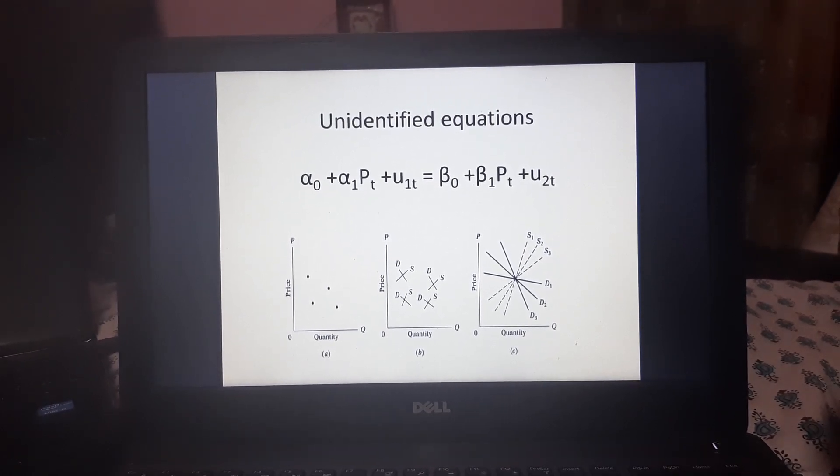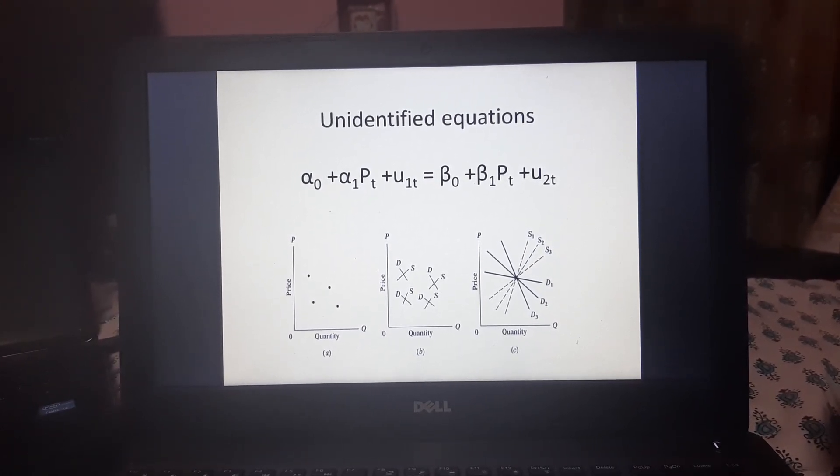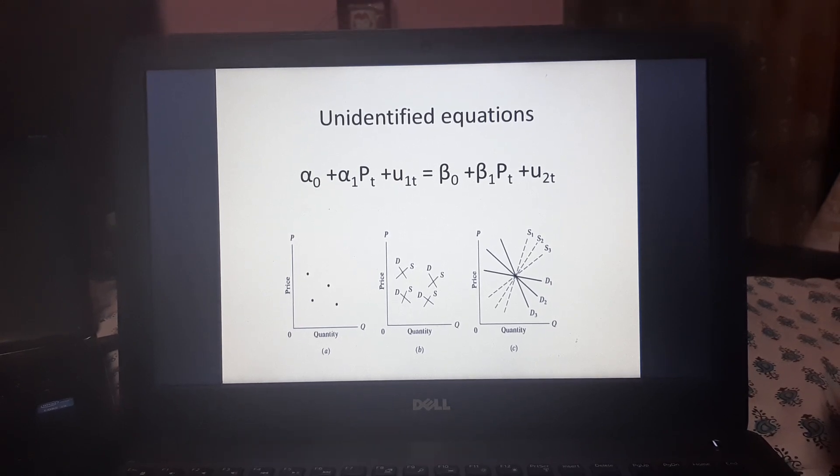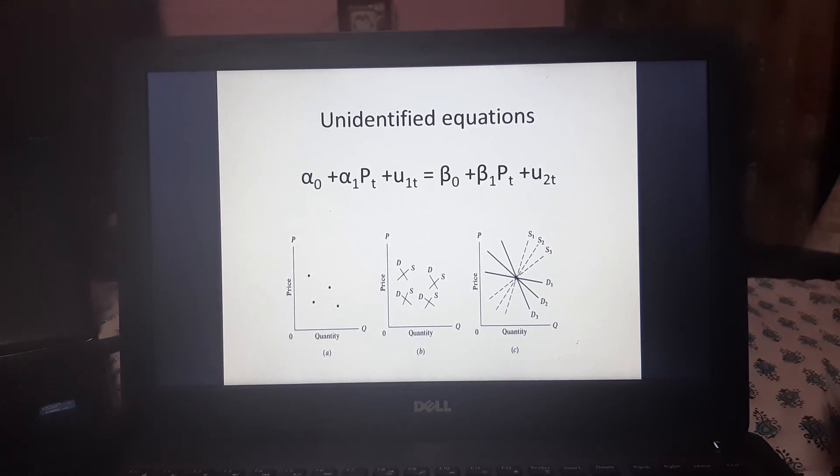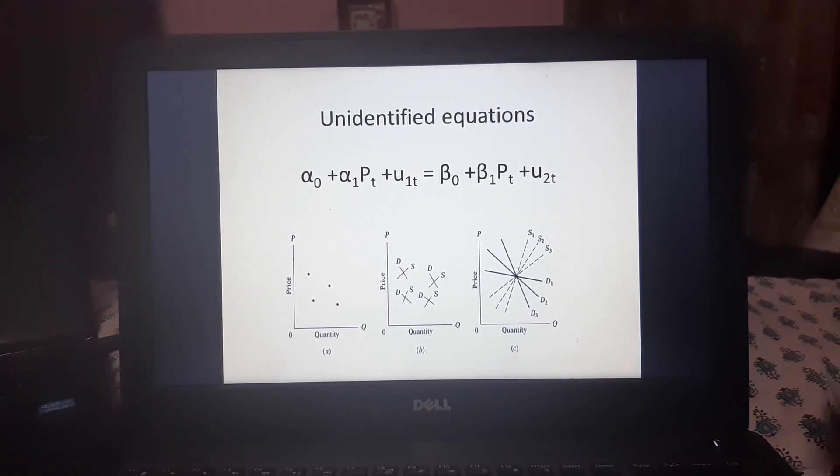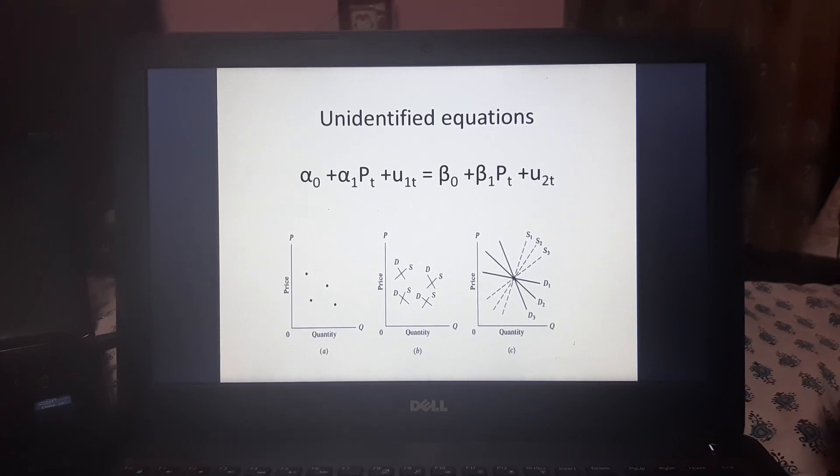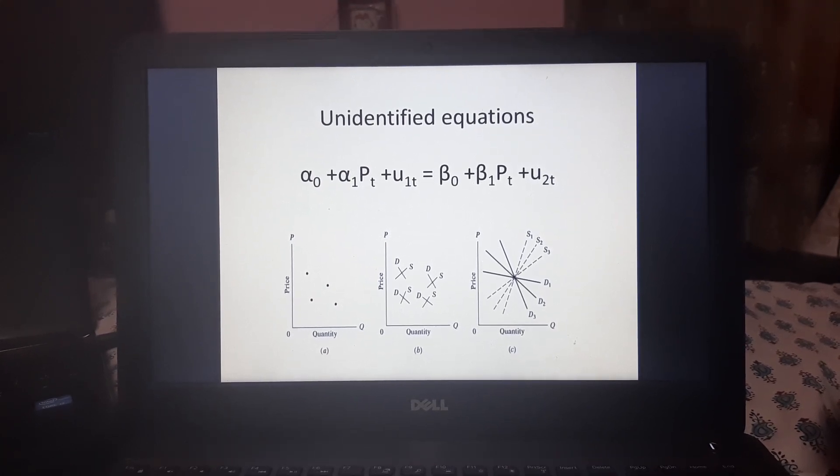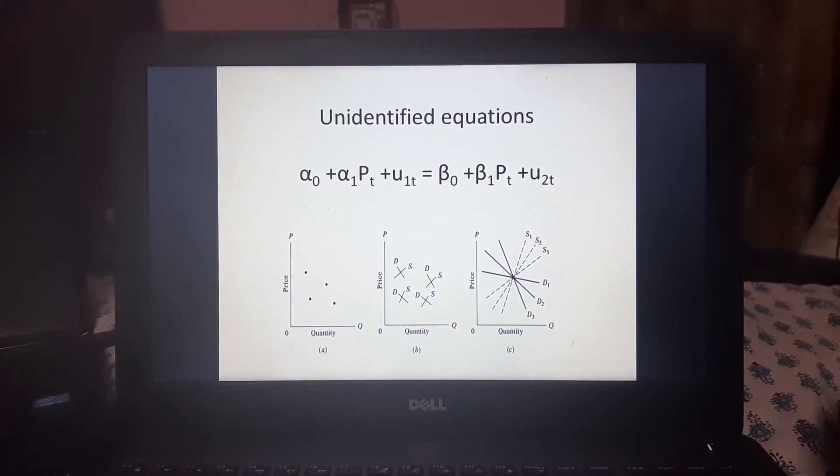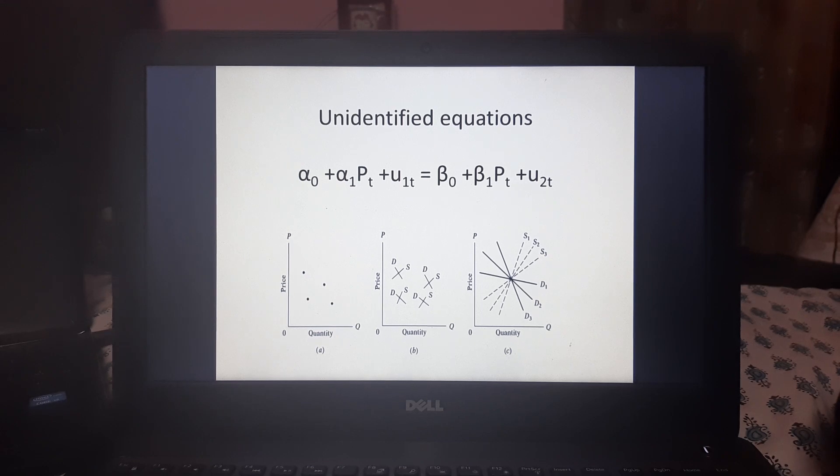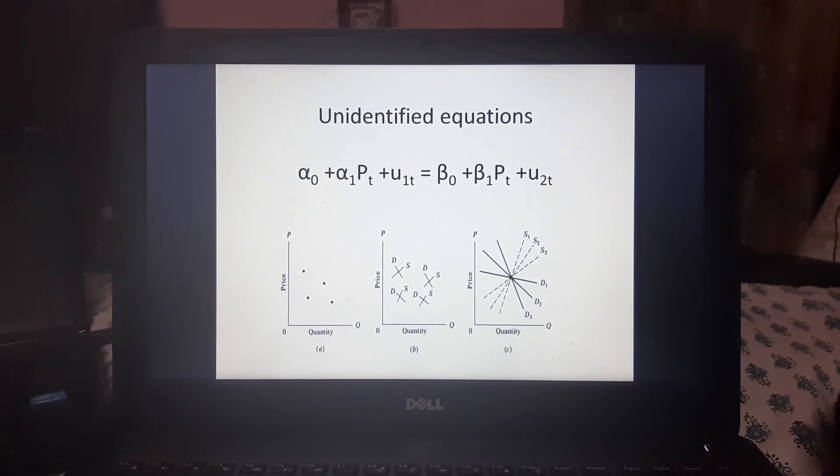And if we take one single point as shown in figure C, then also we can see that from a single point, there are n number of supply and demand curves that are intersecting. So it becomes difficult to identify which demand and supply function we are going to estimate. And even if we think that we are fitting a demand function, then also how do we guarantee that it is in fact the demand function that we are estimating and not something else.